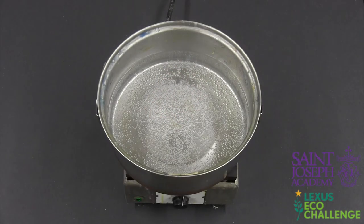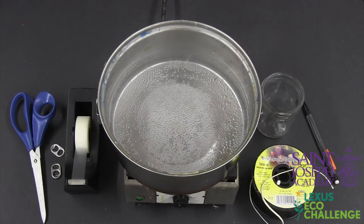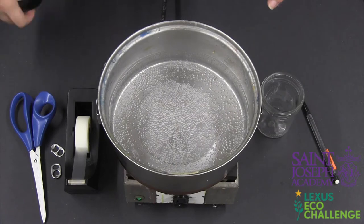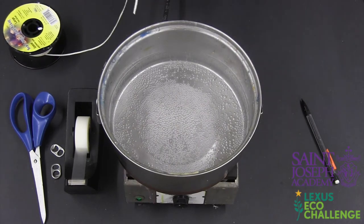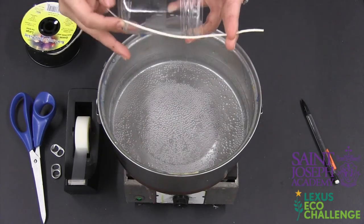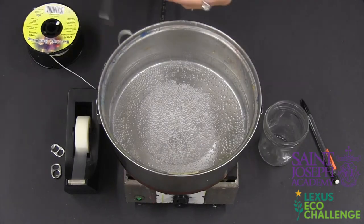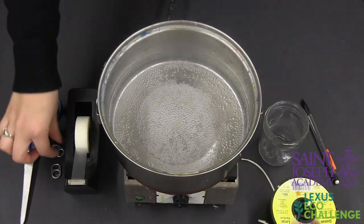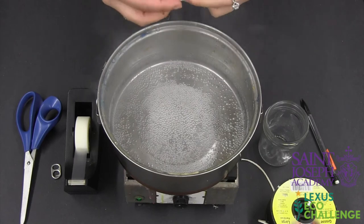The first step is to put a pot of water to boil. While the water is boiling, if the wick that you have did not come with the base already attached, tie a pop tab to the end as an alternative. If you have a wick that comes in a roll like shown in the video, cut it an inch to an inch and a half longer than your jar.